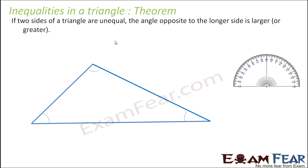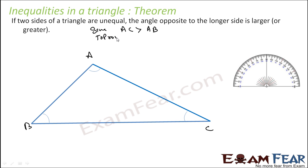The theorem is: if two sides of a triangle are unequal, then the angle opposite to the longer side is larger. Let us suppose this is triangle ABC. Given: AC is greater than AB. We have to prove that the angle opposite to AC, which is angle B, is greater than angle C.